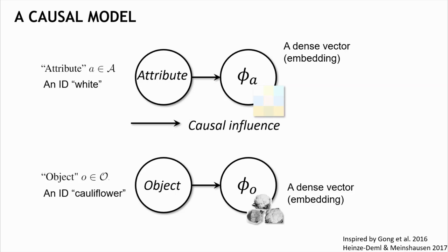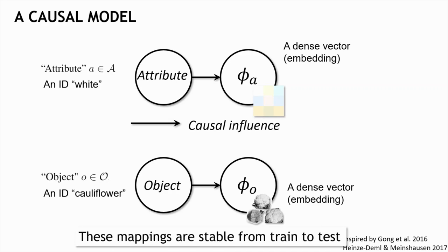Similarly, there is an object variable, let's say cauliflower, and it maps to some stable representation of how a cauliflower looks like. These mappings are stable from training to test time, and together, they jointly generate an image of a white cauliflower.